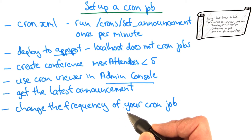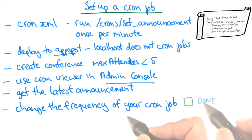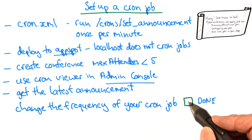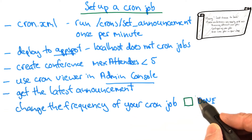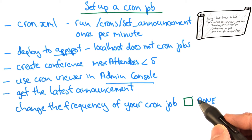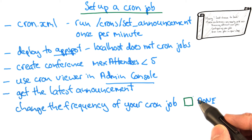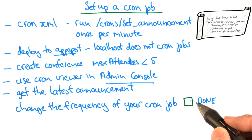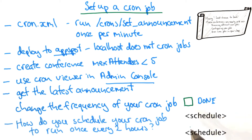So go ahead and change the frequency to once an hour. And when you've done that, come over here and check this box. Alternatively, you could disable the cron job completely by uploading an empty cron job config. But remember, if you just delete the cron config file completely, then the one that's already up on AppSpot stays running. So one more quick quiz: how do you schedule your cron job to run once every two hours? Go ahead and enter that value in here, and that's it for cron jobs.